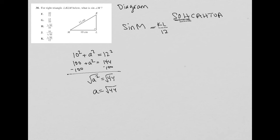So this KL is square root 44, which means in my numerator for my sine of M, it's also going to be square root of 44. So sine M is the square root of 44 over 12, which is choice K.